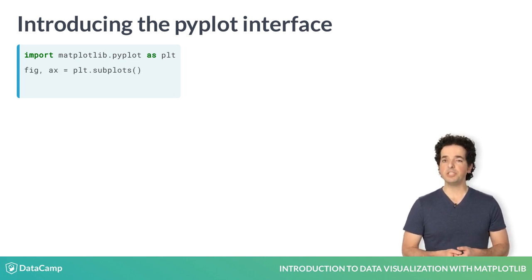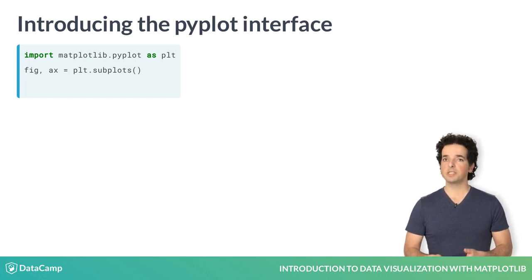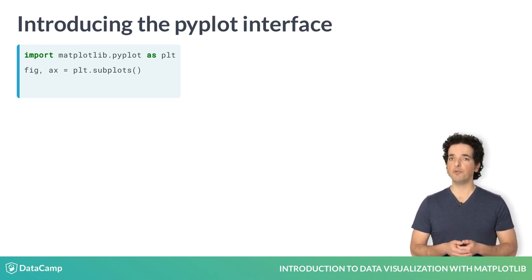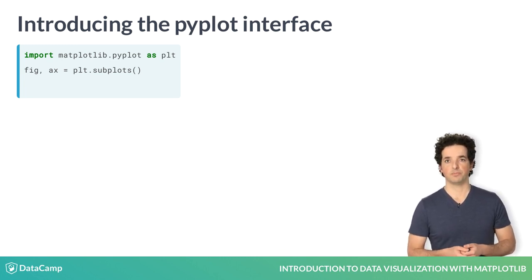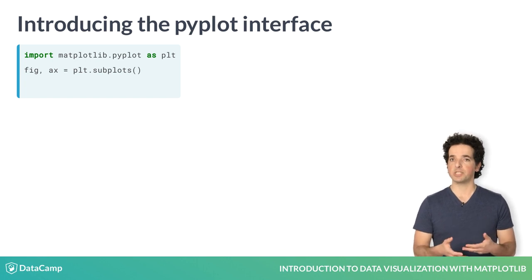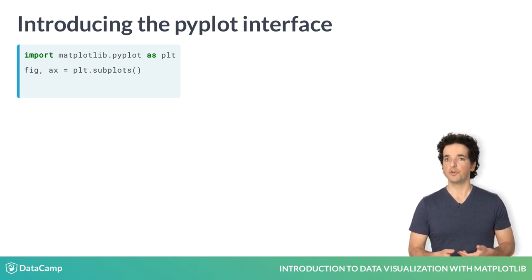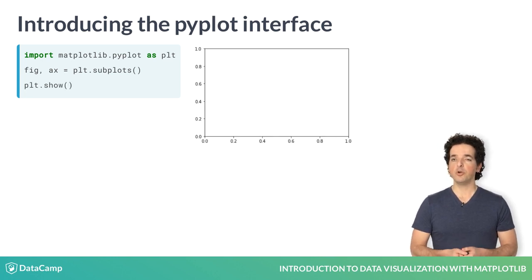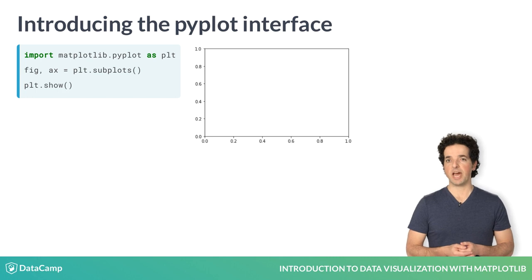The PLT.subplots command, when called without any inputs, creates two different objects: a figure object and an axes object. The figure object is a container that holds everything that you see on the page. Meanwhile, the axes is the part of the page that holds the data — it is the canvas on which we will draw with our data to visualize it. Here, you can see a figure with empty axes.